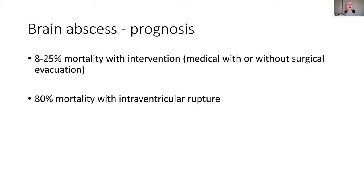Mortality from brain abscess can be quite high, though it has improved significantly with better antibiotics, early imaging, and better surgical techniques. The key is early antibiotic treatment to control the infection and stop it from getting worse. The big concern is if the infection spreads and ruptures into the ventricle — that's a very high mortality, quoted at 80 to 90%.